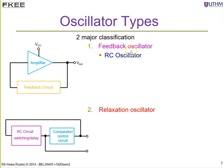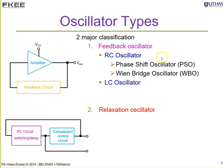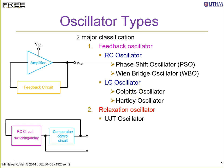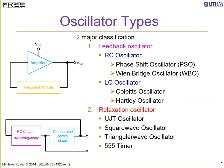Under the feedback oscillator, we'll look into RC oscillators and LC oscillators. Phase shift and Wien bridge are two types covered, followed by Colpitts and Hartley in the LC or tuned oscillator category. For relaxation oscillators, we'll cover the UJT oscillator, square wave oscillator, triangular wave, and lastly the 555 timer — including astable and monostable multivibrators.